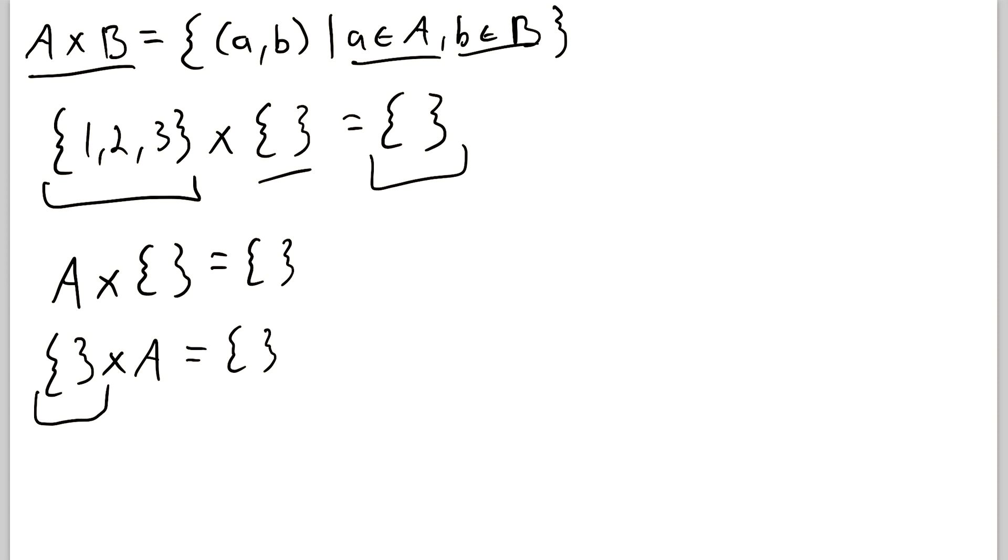Thus since the Cartesian product is a set containing all possible ordered pairs where the first element is from the first set and the second element is from the second set, you just don't get any elements so you don't have a Cartesian product containing any elements, thus of course you get the empty set.